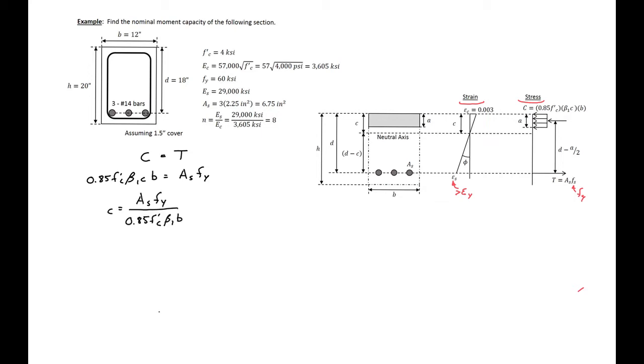We can then solve for C, which I've done, and we can plug in our values. So we'll have our area of steel is 6.75, our yield stress is 60 ksi, divided by 0.85 times 4 ksi concrete times our beta_1 for 4 ksi is 0.85. Remember this will change with different strengths of concrete, and our b is 12 inches. So we'll find our C to be 11.68 inches.